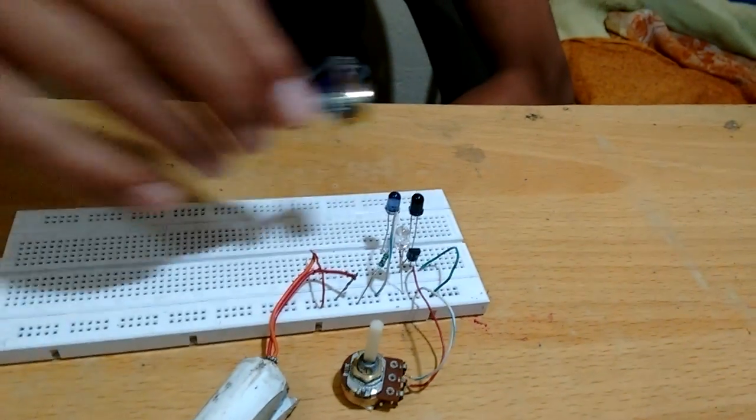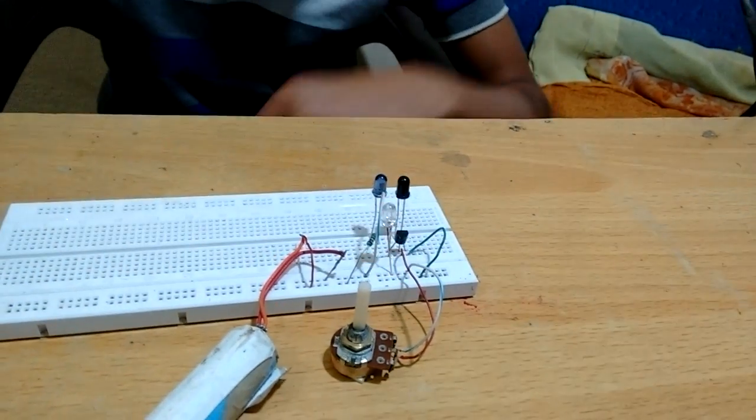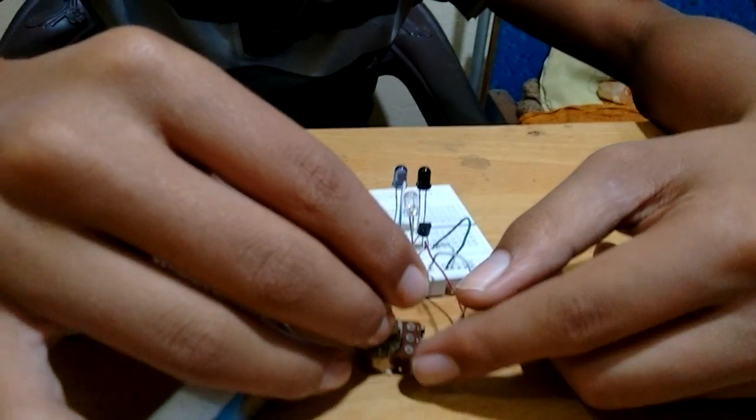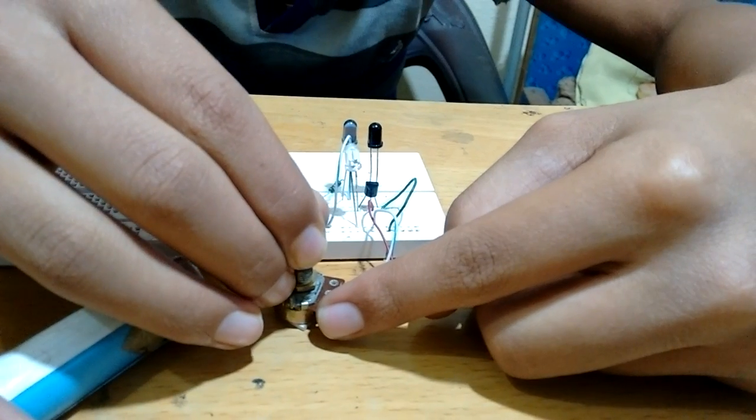If I bring anything closer to the IR receiver, the LED will glow. And the use of this is to control the sensitivity of this proximity sensor.